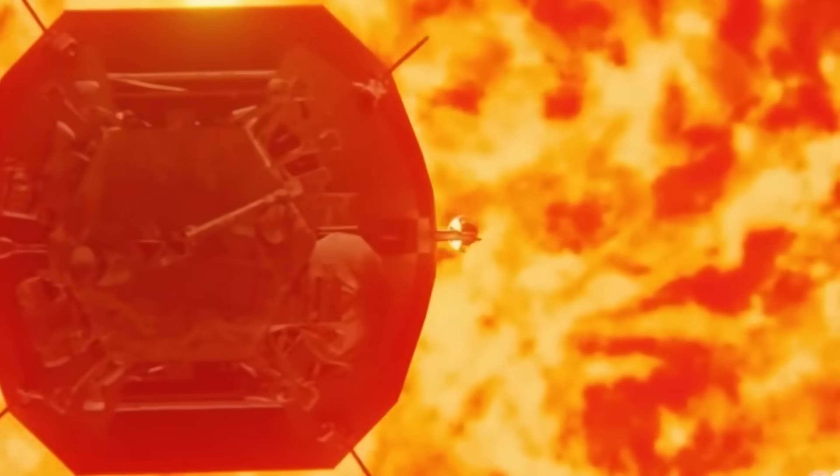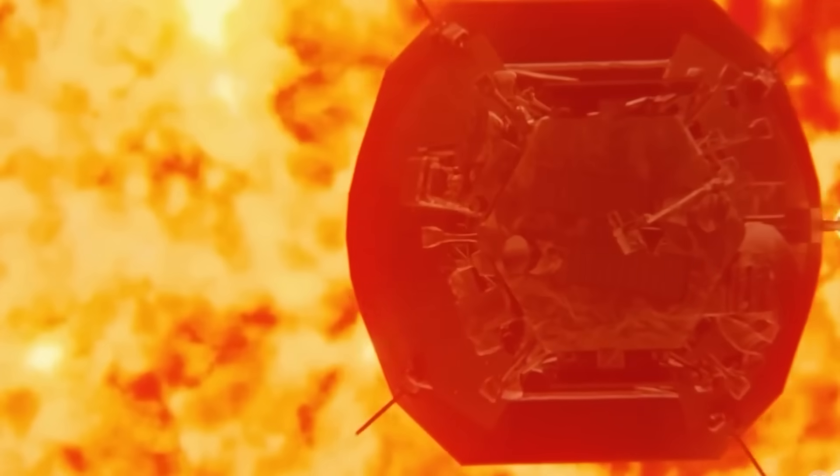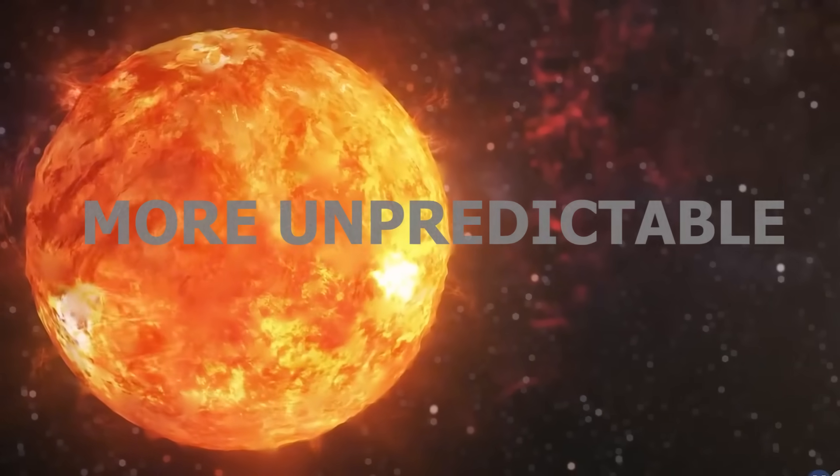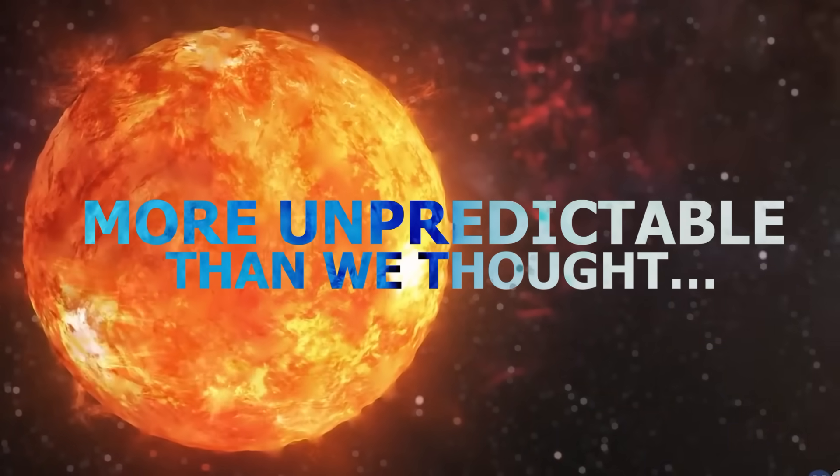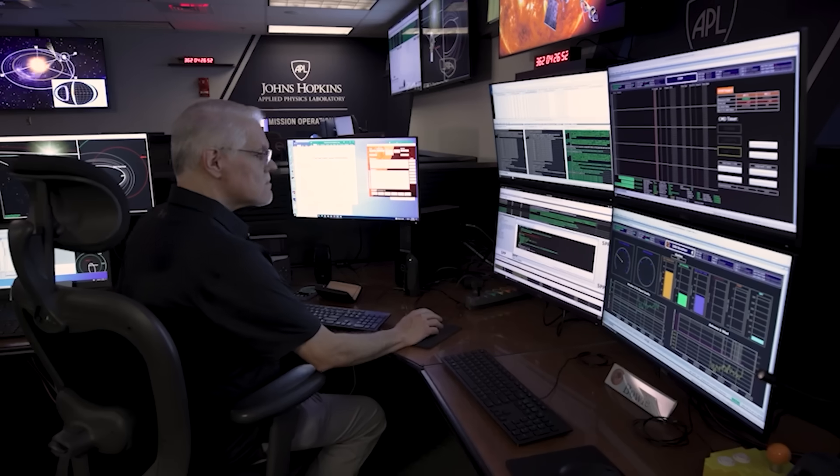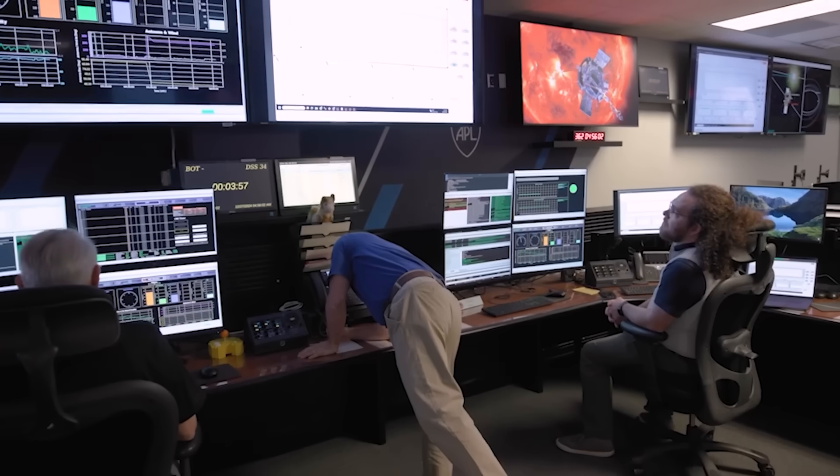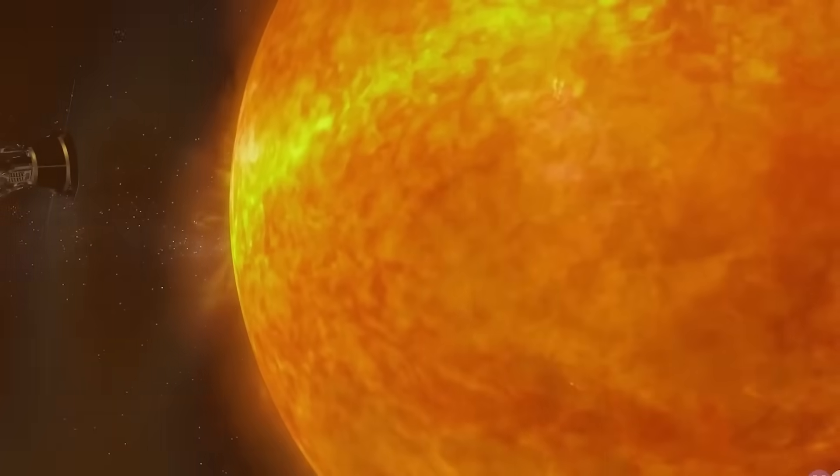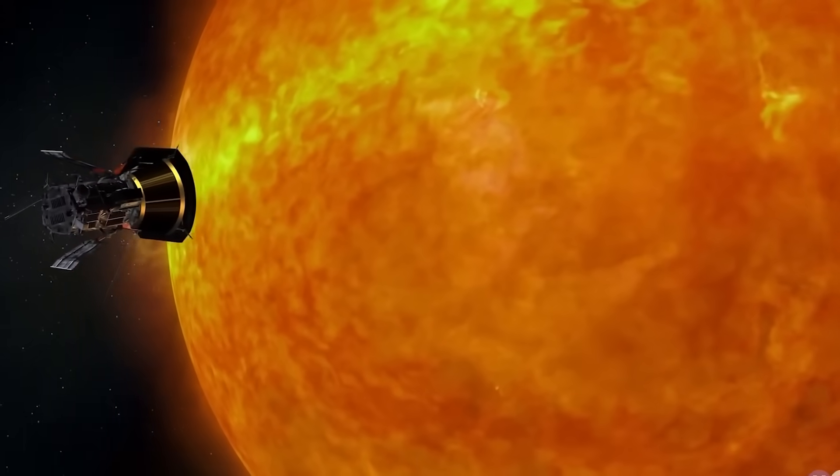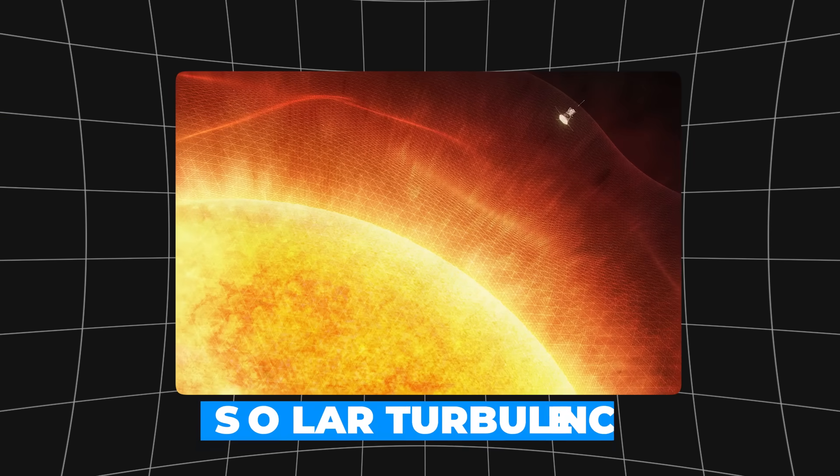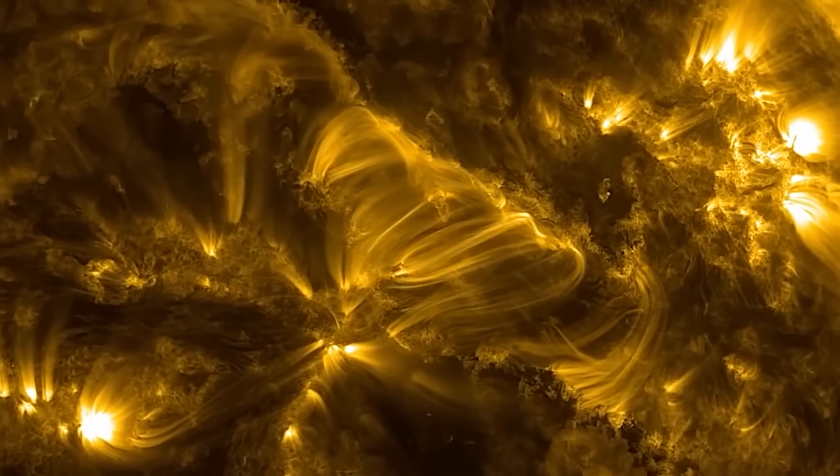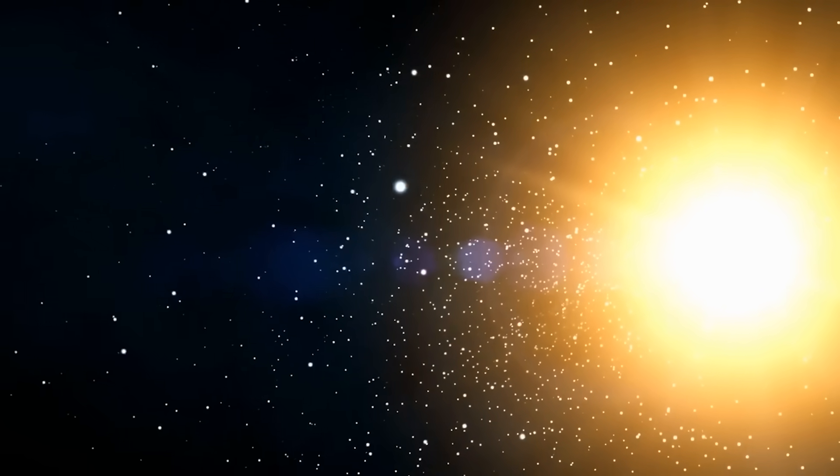And here's where things get even more bizarre, because what the probe found suggests that the sun may be even more unpredictable than we thought. Scientists analyzing the Parker Solar Probe's latest data are stunned by what they've found. The mission was expected to confirm existing theories about solar turbulence, but instead, it uncovered energy levels far beyond what anyone predicted.